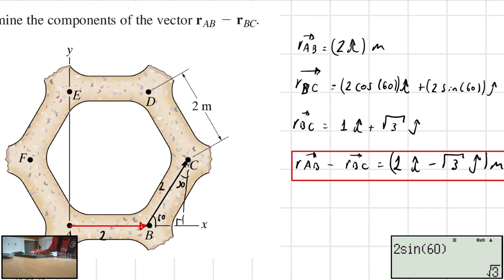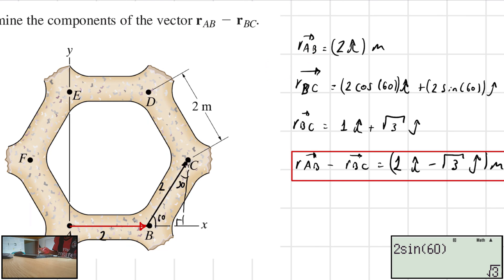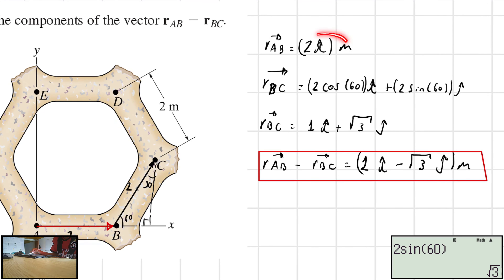Now, for when we are looking for the vector RAB, it is very important that we take into account the order of the letters. Because it is different to use AB than BA because of the direction of the vector. This is the vector AB, and the vector BA would be this one. When we are talking about vectors, we only care about magnitude and direction. Right here we have 2 units along the i-direction, which is related to the x-axis. This is in meters.